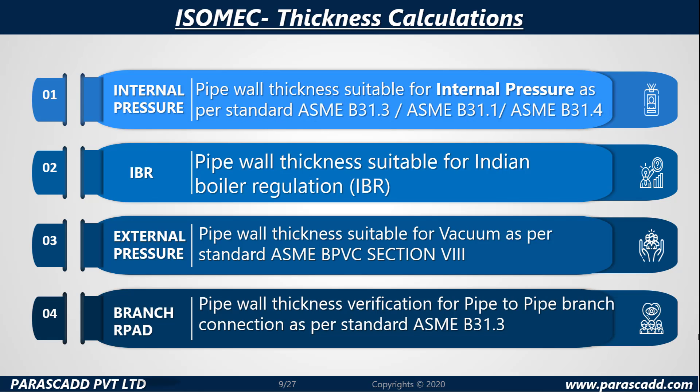Isomec thickness calculations cover four areas. First, internal pressure: pipe wall thickness must be suitable for internal pressure as per ASME B31.3, B31.1, and B31.4. Second, IBR: pipe wall thickness must be suitable for Indian Boiler Regulation. Third, external pressure: pipe wall thickness must be suitable for vacuum as per ASME BPVC Section 8. And lastly, the branch repad: pipe wall thickness verification of pipe-to-pipe branch connection as per ASME B31.3.